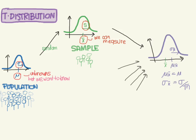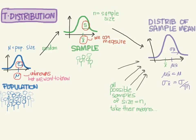So we use a different distribution — the distribution of the sample mean. The way we construct this is we take all the possible samples of sample size n, take their means, plot those, and that's how we get our distribution of sample means. Now this is also impossible to do in practice, because all possible samples of sample size n would be a huge number, so that's not something we can actually do.